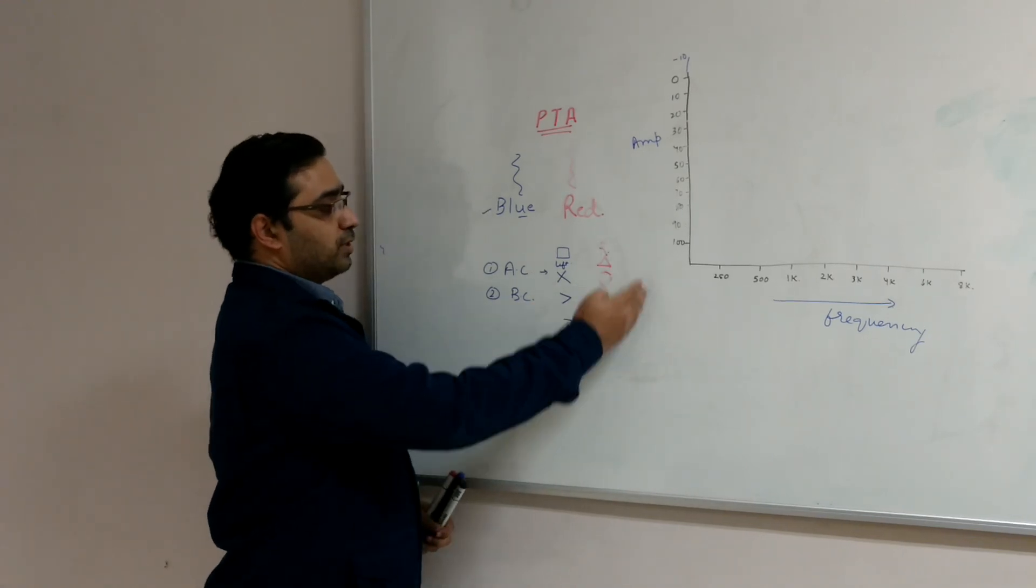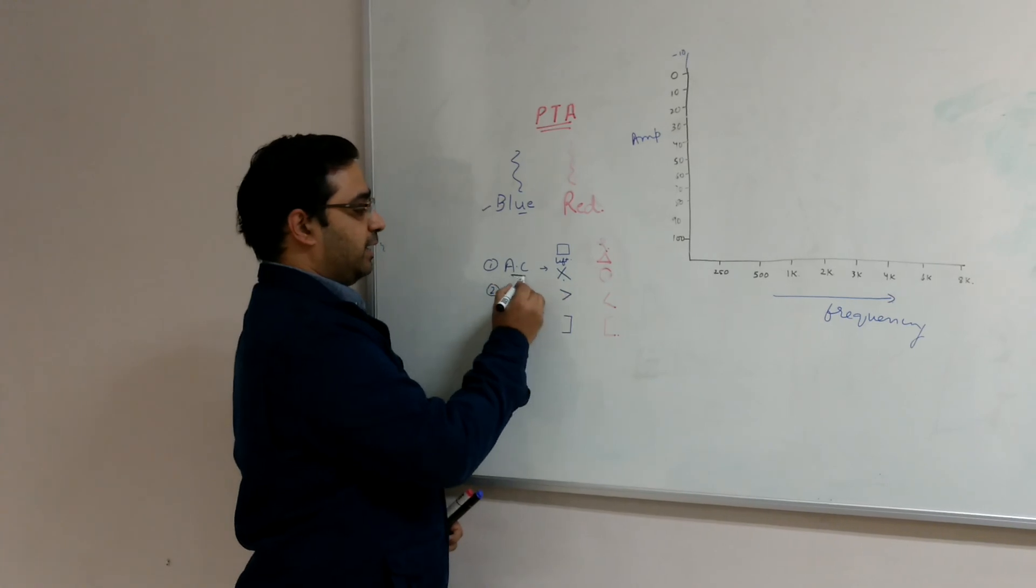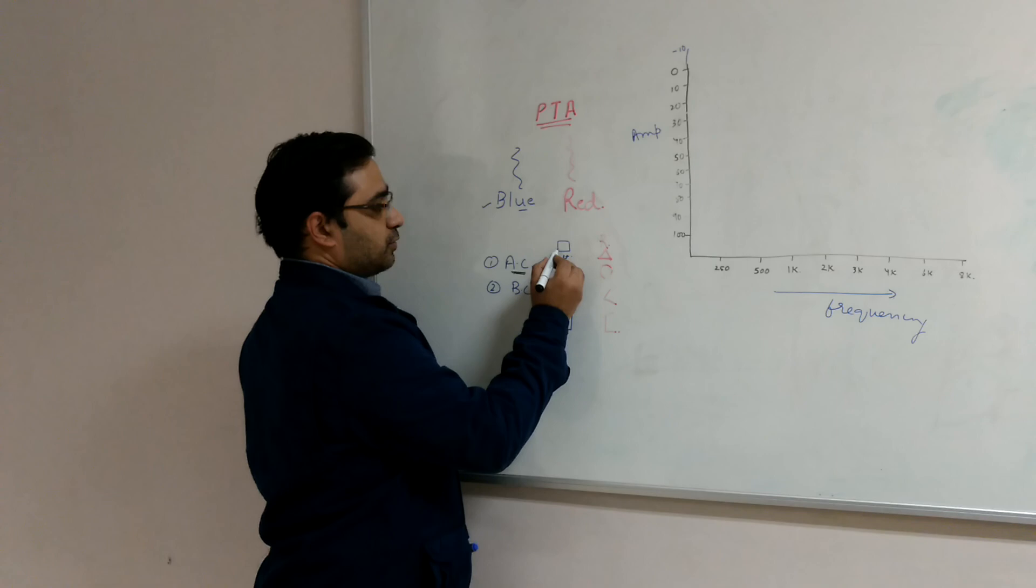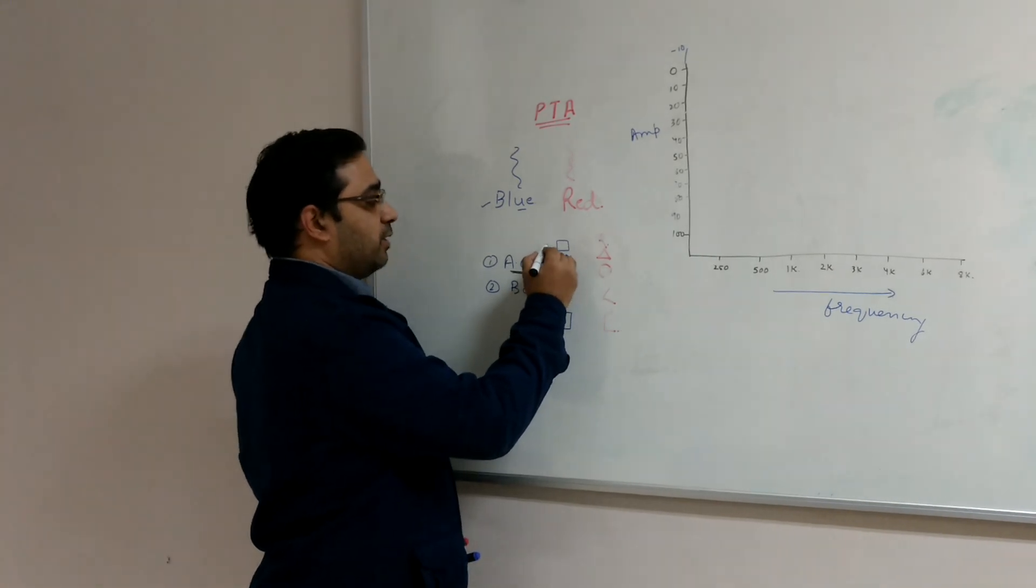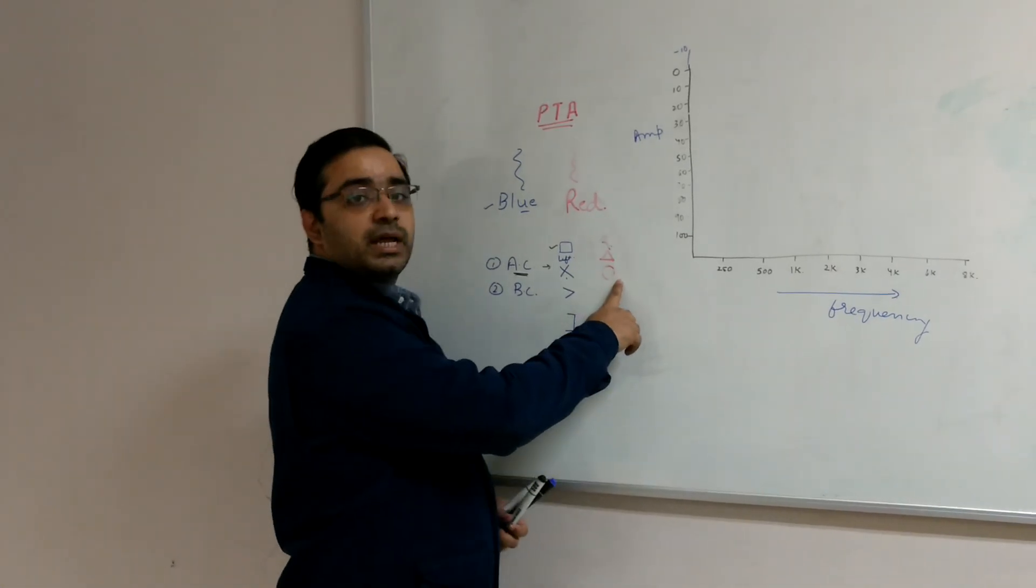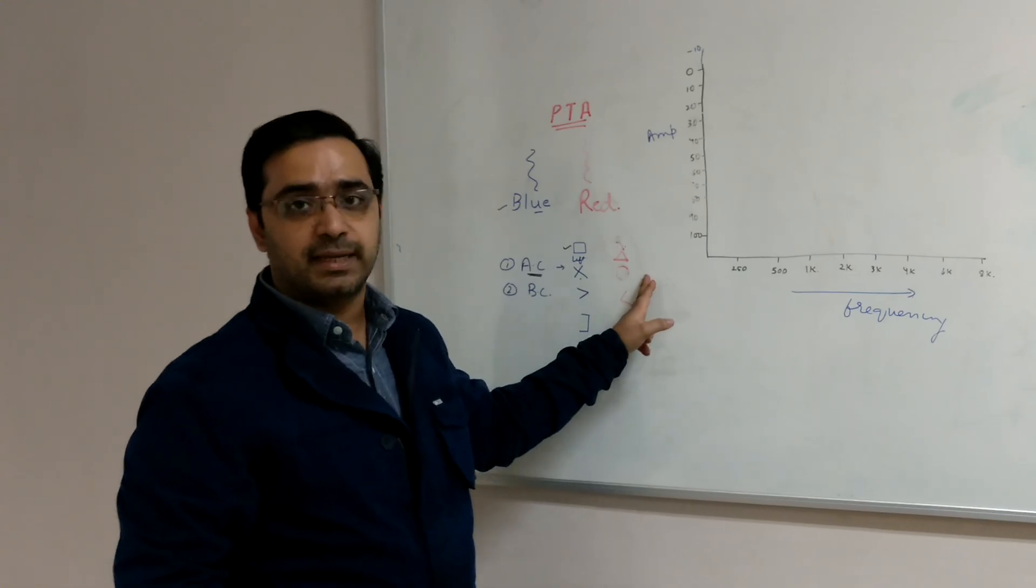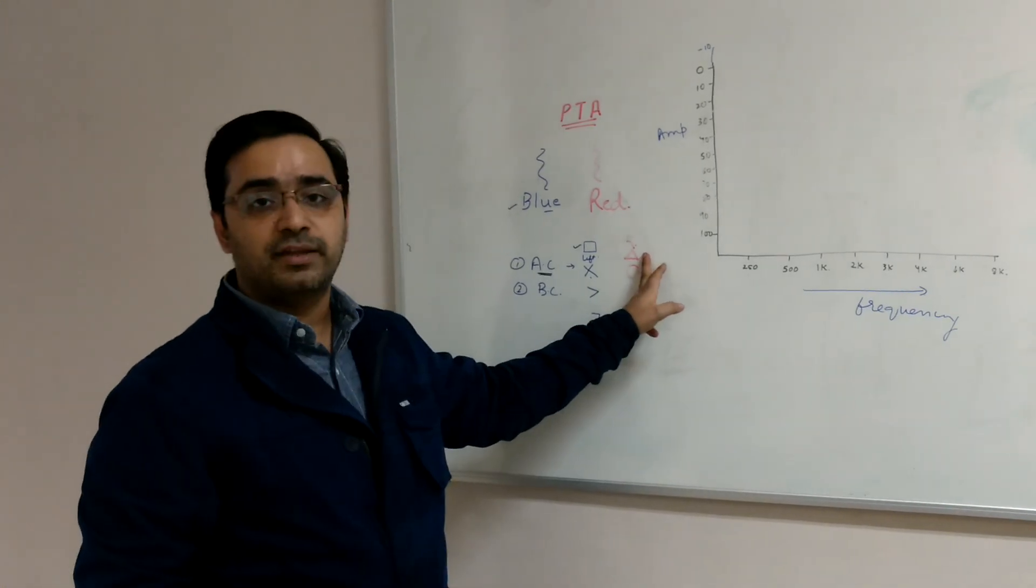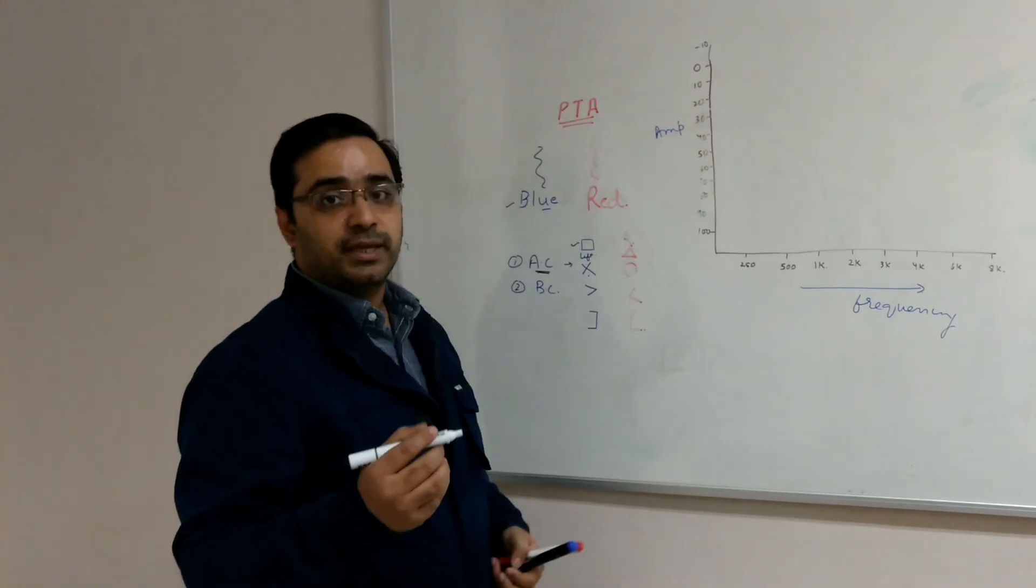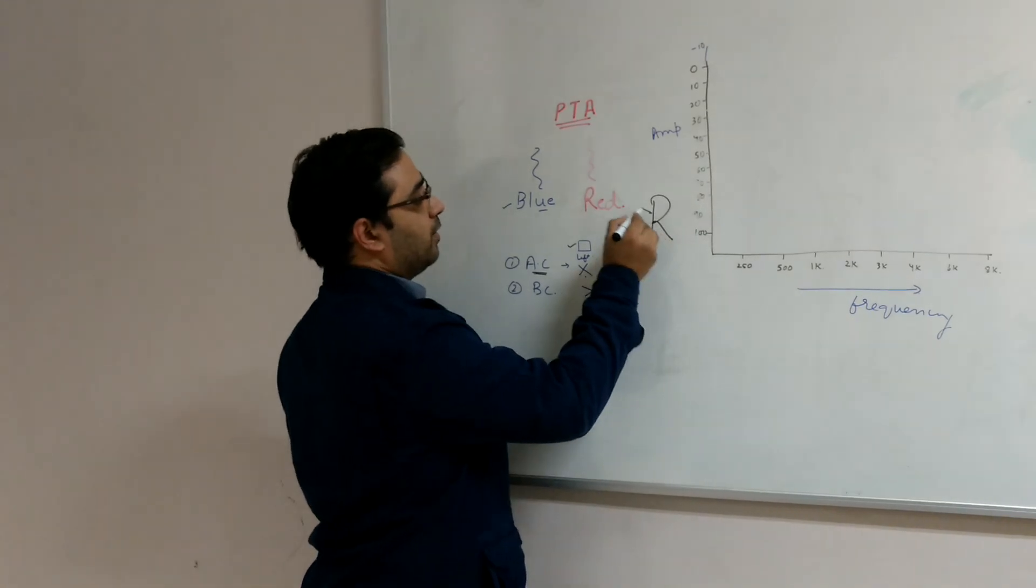Then you should know certain symbols also. Cross is for air conduction left side. Square or rectangle is for air conduction masked left side. Round is for air conduction unmasked right side. Triangle is for air conduction masked right side.